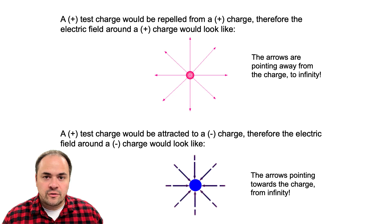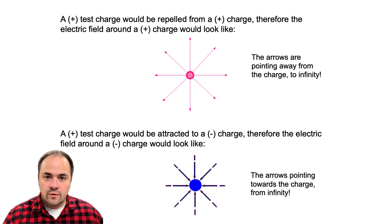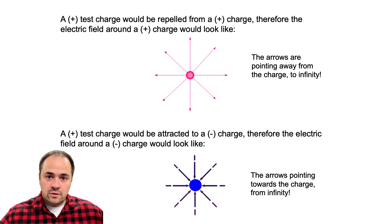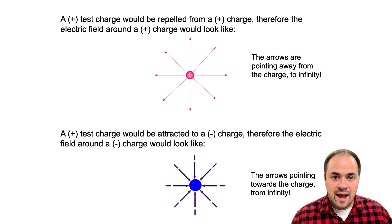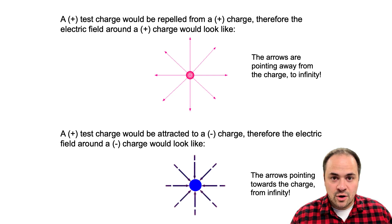Since we draw electric fields indicating what a positive test charge would do, whenever we draw an electric field diagram for a positive source charge, the arrows are always going to be pointing away — to show that the source charge repels that positive test charge. For negative source charges, we always draw the arrows towards the negative charge, showing the attractive force between the negative charge and the positive test charge. Now because electric fields are infinite in how far they can extend, these field lines technically would extend an infinite distance away from the charge. We do know from Coulomb's Law though that as you get further away, the force decreases dramatically, so once you get a certain distance away, the field is negligible.